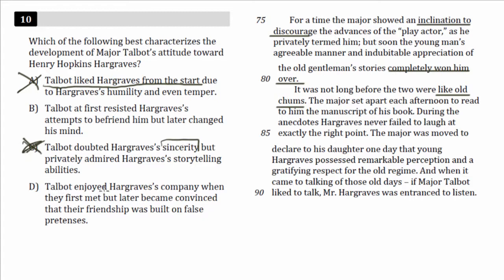Choice D: 'Talbot enjoyed Hargraves' company when they first met, but later became convinced that their friendship was built on false pretenses.' This is a 180 answer — pretty much the opposite of what we found. He was at first not a fan but then became a fan; this reverses it. The SAT likes to do that — they also like to put small things that are wrong. That's why C and A are wrong. The right answer is B.